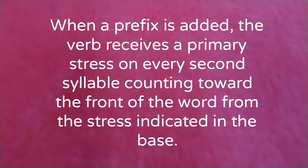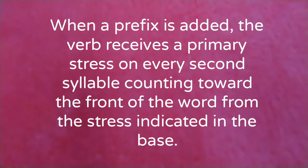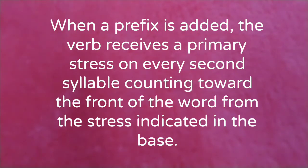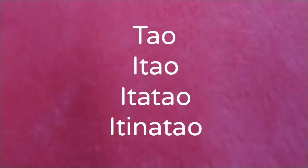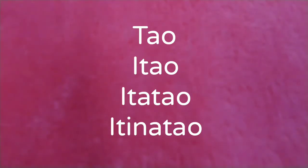When a prefix is added, the verb receives a primary stress on every second syllable counting toward the front of the word from the stress indicated in the base. For example: tao, itao, itatao, itinatao; apod, nag-a-apod.